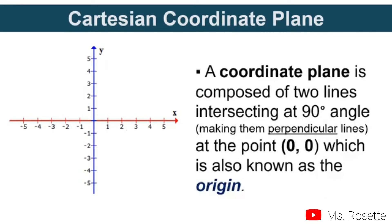A coordinate plane is composed of two lines intersecting at a 90-degree angle at the point (0,0), which is the middle part of the graph. This is also known as the origin.